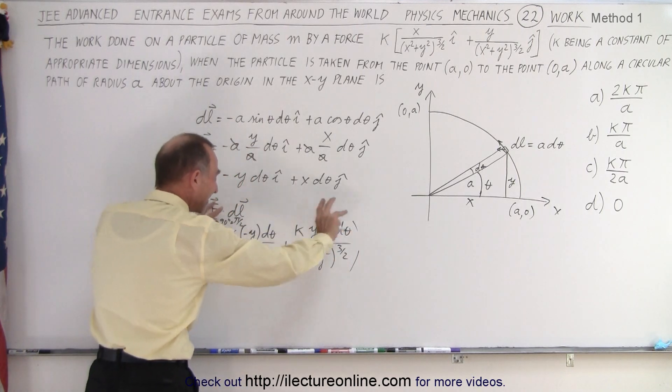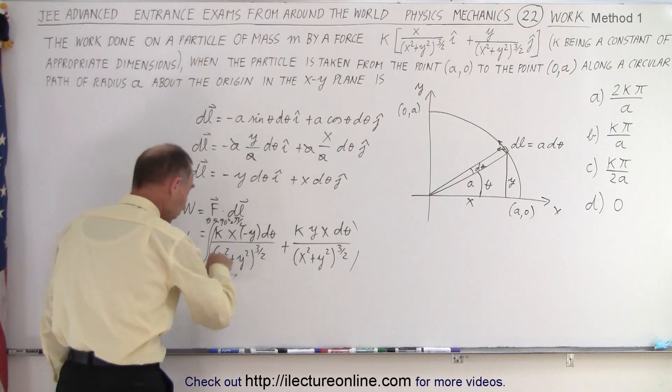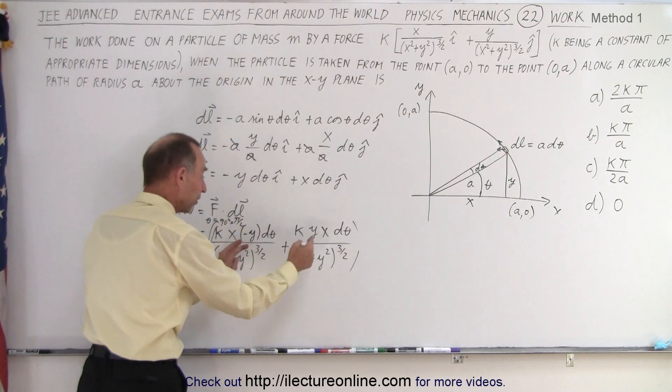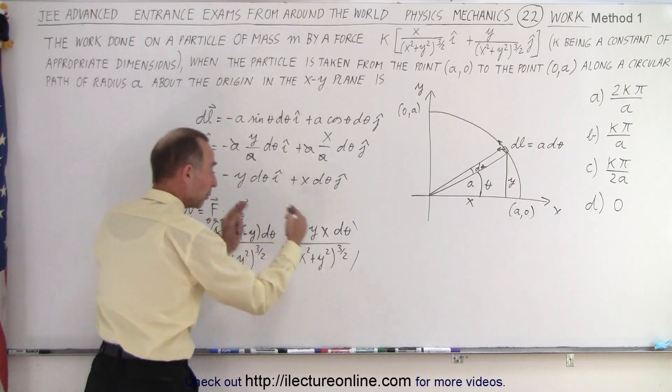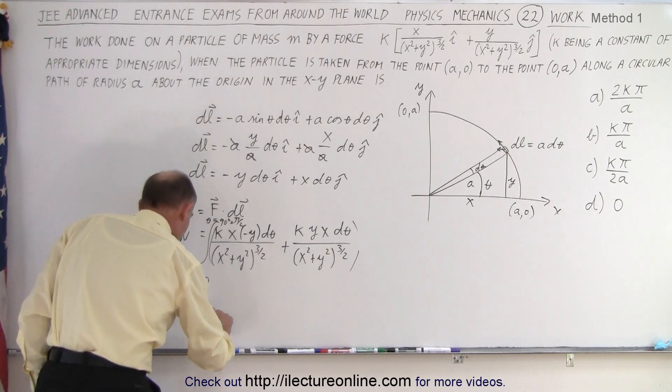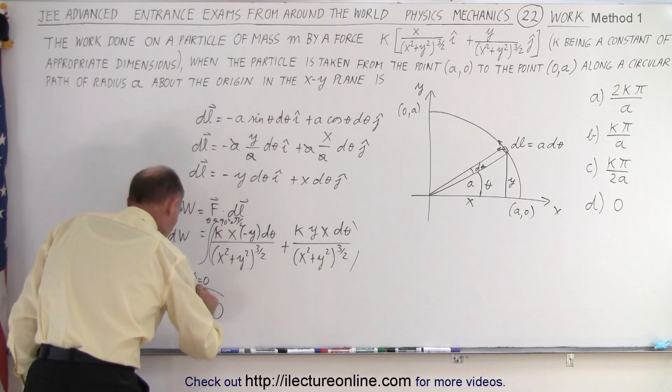Which means that if we're going to integrate them with the same limits, we'll get the exact same value for these two parts, but one will be negative, the other one will be positive, and they will therefore cancel each other out. And the result is that this is equal to zero. No work done.